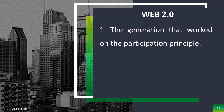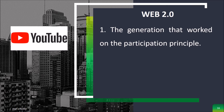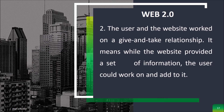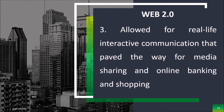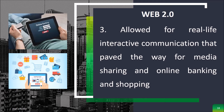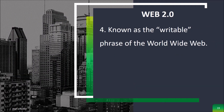Web 2.0 is the generation that works on the participation principle — for example, YouTube, Facebook, etc. The user and the website work on a give-and-take relationship, meaning while the website provides a set of information, the user can work on and add to it. It allowed for real-life interactive communication that paved the way for media sharing, online banking, and shopping. It is known as the writable phase of the World Wide Web.